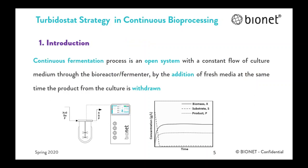Let's start with the introduction. Continuous fermentation is a process with a constant flow of culture medium through the bioreactor. The volume in a continuous fermentation is usually constant. The concept of continuous fermentation processes is closely linked to the chemostat, where one nutrient is growth-limiting and used to determine the growth rate. However, there are several other less common ways by which a continuous fermentation can be controlled. In the next section I will explain all different modes for continuous bioprocessing, to later focus on turbidostat in the third part of this webinar.